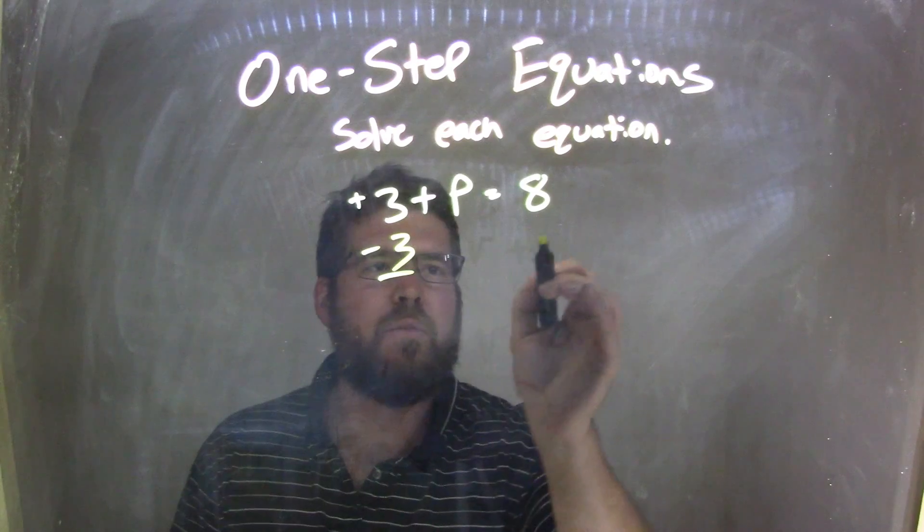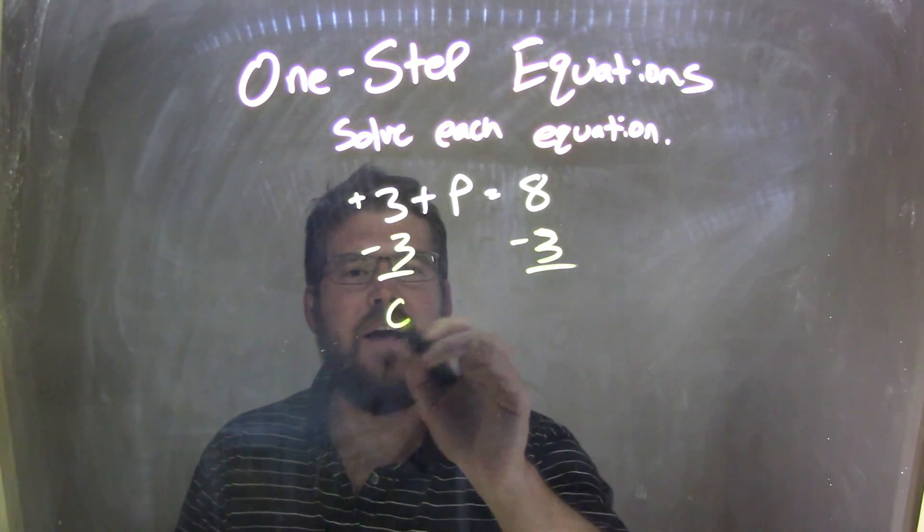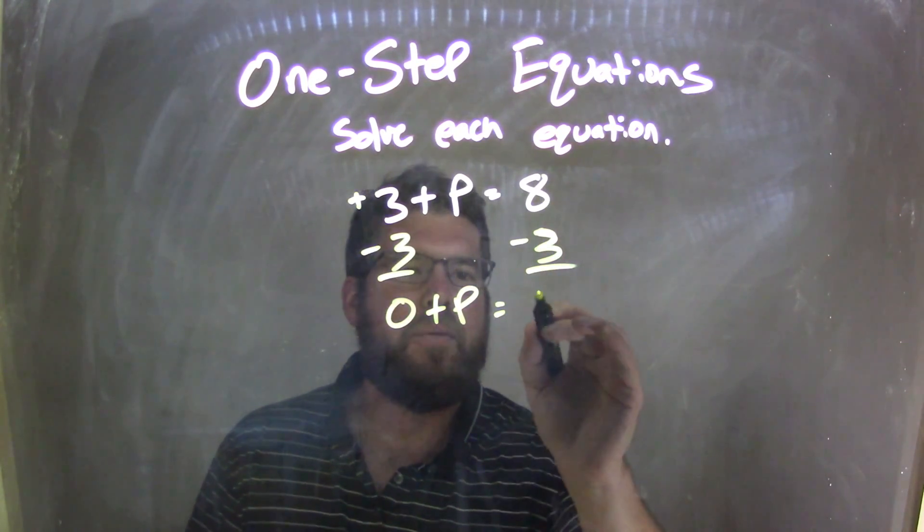Now, if I subtract a 3 to both sides, that 3 will cancel. I have a 0 plus p, and 8 minus 3 comes out to be 5.